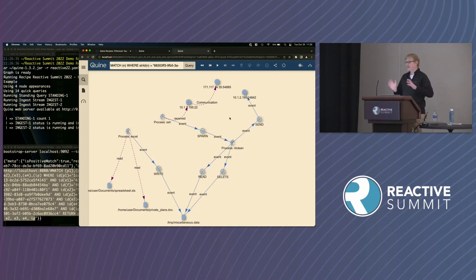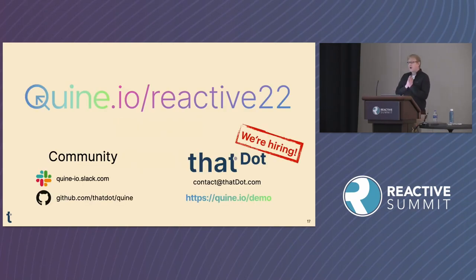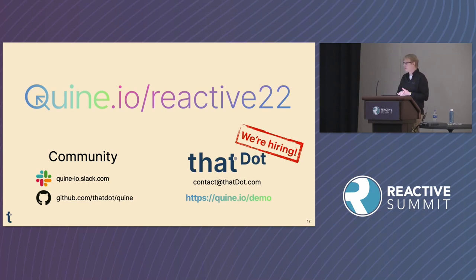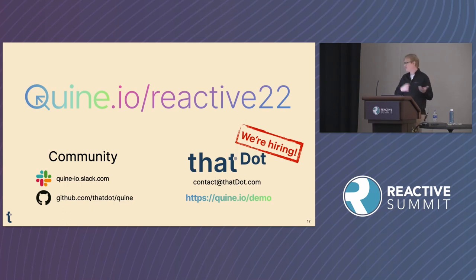That's an example of using Quine connected into Kafka to consume data, build a graph, monitor the graph for complex patterns, and every time one of those patterns is found, send a downstream event — so you don't have to build oodles of infrastructure and microservices just to do that complex event processing. To wrap up: quine.io is the open source website where you can check out the code, find links to GitHub and the Slack community. There are recipes to demonstrate different use cases. If you'd like to try and run everything I showed here, check out quine.io/reactive22 — you'll find the slides, the files I was using, and sample files so you can run this yourself.